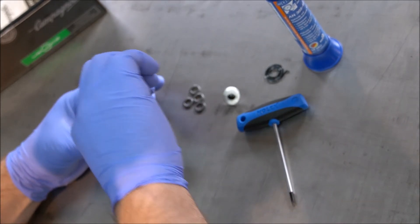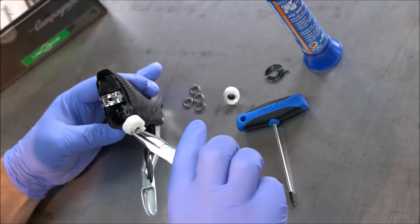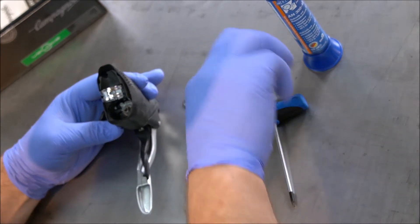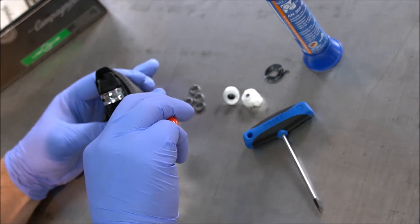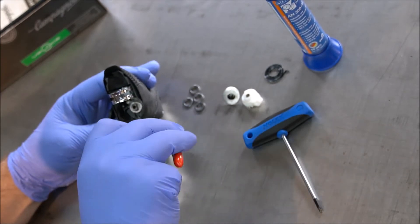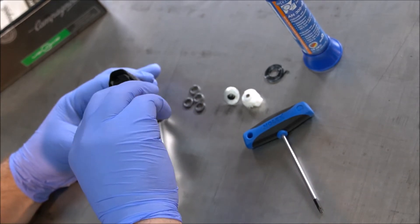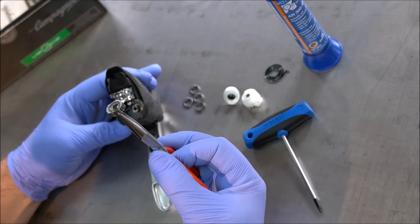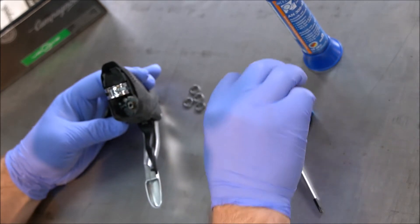And then you have the cable spool, the white plastic parts. Take it out. And then you see the ratchet wheel. You also have to take it out. It's not needed anymore.